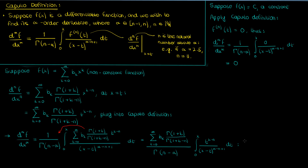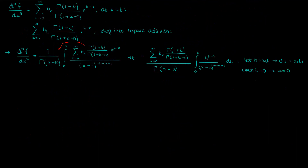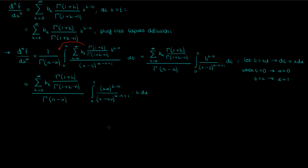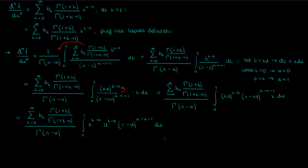Let's now make a variable substitution where we let t equal a new variable u times x. We're going to integrate with respect to u. Since x is effectively a constant, if t equals x times u, then dt equals x du. When t is 0, u is 0, and when t is x, u is 1, so our new integration limits become 0 and 1. Substituting all of this into our integral and moving the denominator term to the numerator by switching the sign of its exponent, we then separate the x and u terms, combining the powers on all the x terms. Since x is a constant as far as this integral is concerned, we can take it out of the integral.